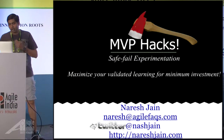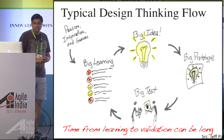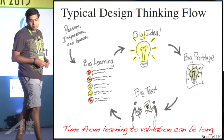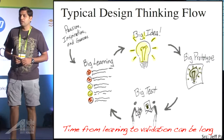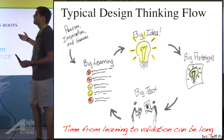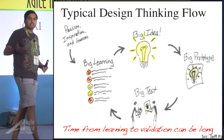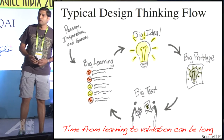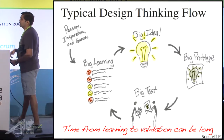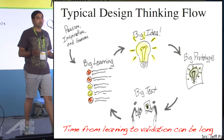I actually picked this up from Jeff sometime ago. Jeff talks about — if you think of a typical design thinking process, you have a big idea and basically you build a big prototype out of it. You take the big prototype, run through a bunch of tests, and try to come up with a long list of learnings. Then you go and iterate through this process in an iterative cycle till you have enough confidence about what you're trying to build.